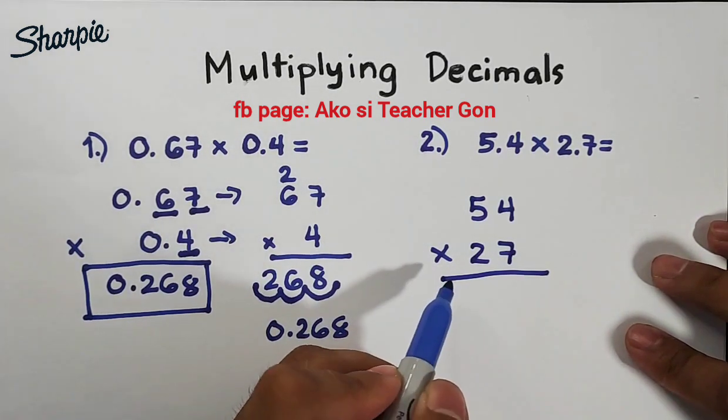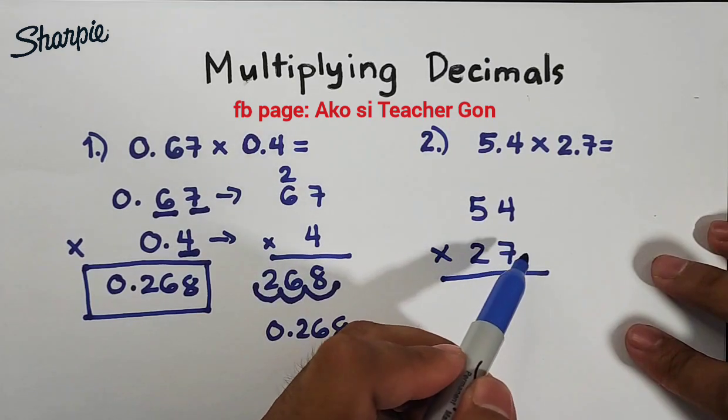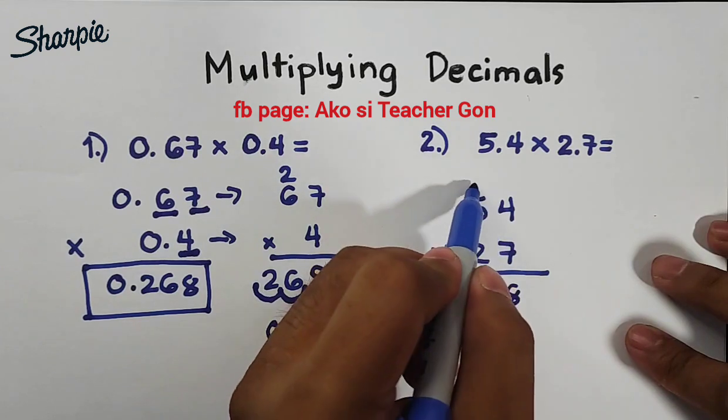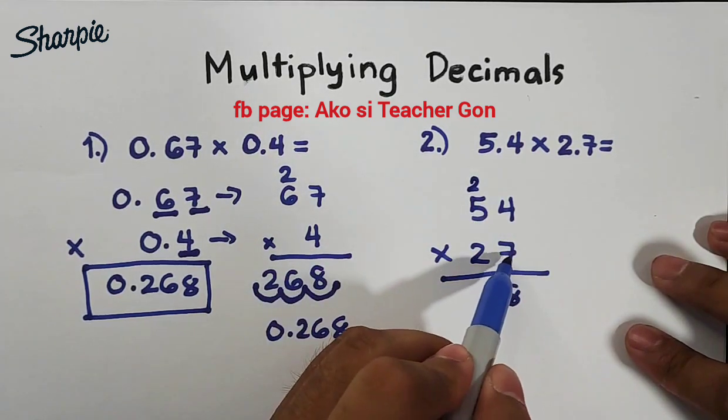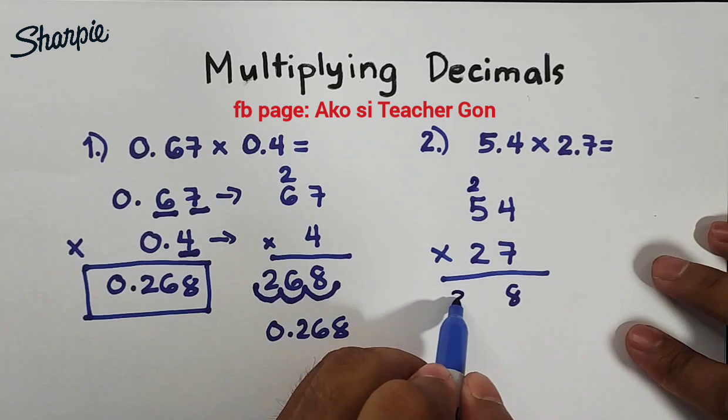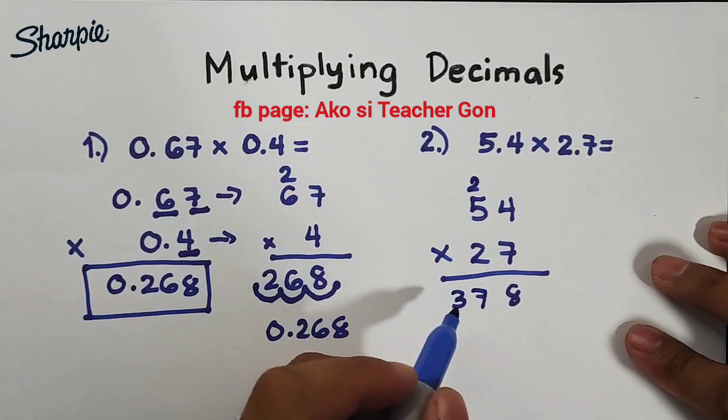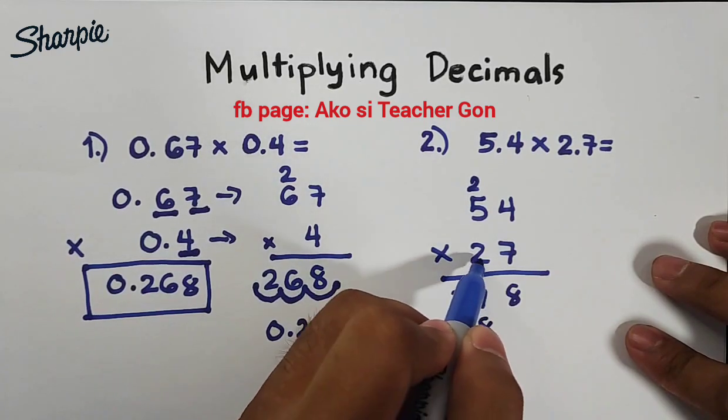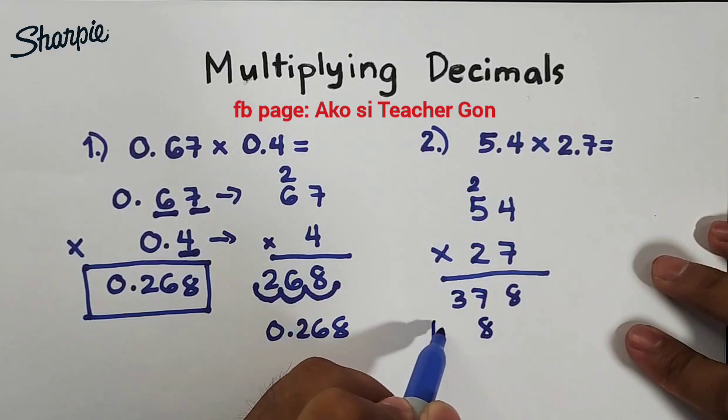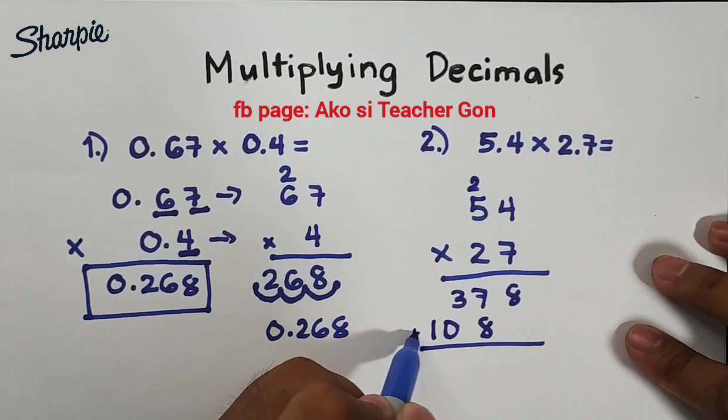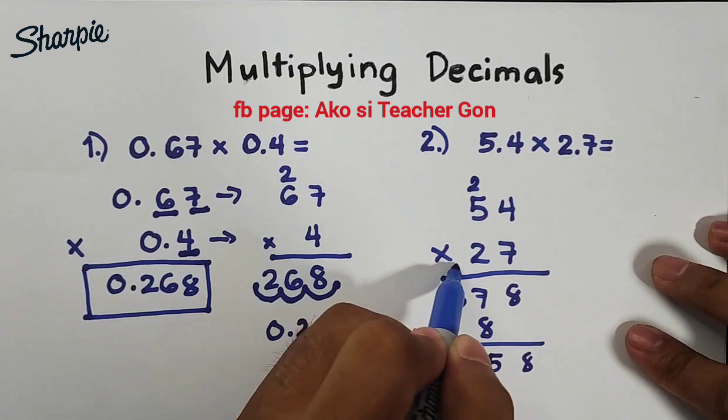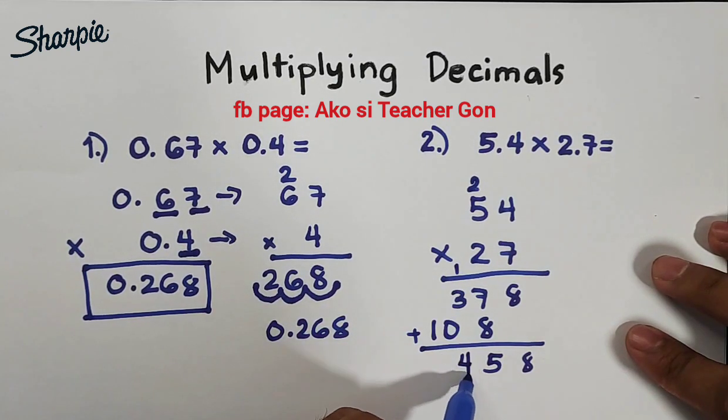So we will multiply them manually. 7 times 4 is 28, we have your 8 and then carry 2. 7 times 5 which is 35 plus 2, that is 37. Followed by 2 times 4, that is equal to 8. 2 times 5 which is equal to 10. So what we need to do here is to add them: 8, 7 plus 8 is 15, carry 1. 1 plus 3 plus 0 is 4, then bring down 1.